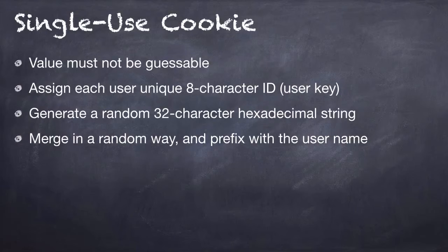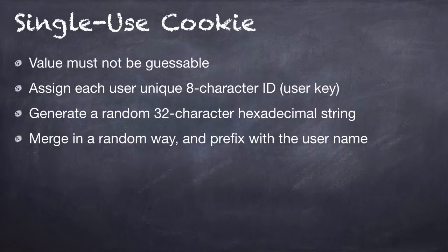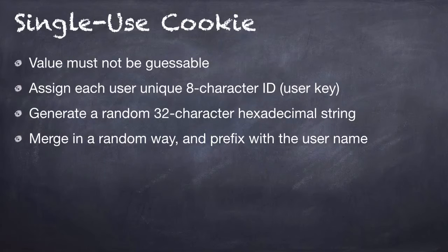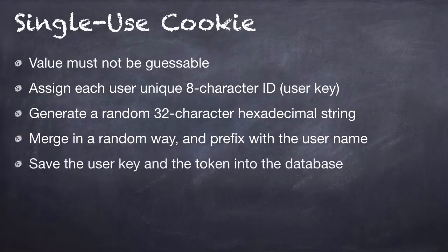And this has to be random. After that, we're going to merge these two — the 8 and 32 characters — together with the username. So we're going to have our username; say, for example, our username is Hassan. Then we're going to have our 8-character ID paired with the 32-character hexadecimal string, and I'm going to show you this even more clearly in the examples.